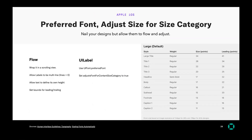iOS has the idea of a preferred font. There are various things you can set a font to — whether it's body, subhead, or different title sizes. If you use this feature, set your fonts to preferred font, and then also set adjustsFontForContentSizeCategory to true, then your fonts will scale up and down. If you have a font that's a title and one that's a body, when the user changes the font size, it will increase all of the fonts in relative proportion.